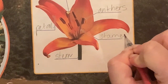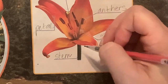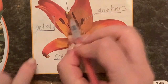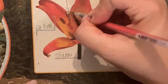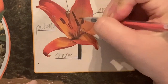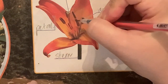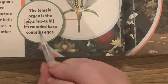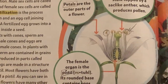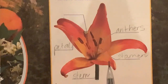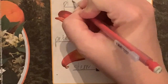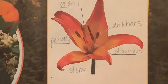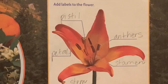Going back, I'll label the stalk which is the stamen. This diagram shows little tiny yellow circles indicating the eggs — and I know that's the female part, which is called the pistil. So I'll go back and label the pistil.